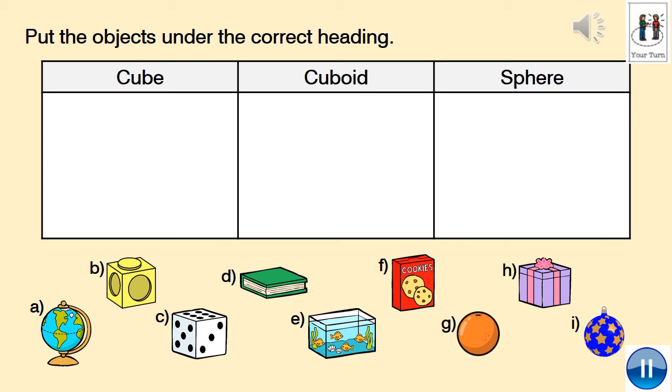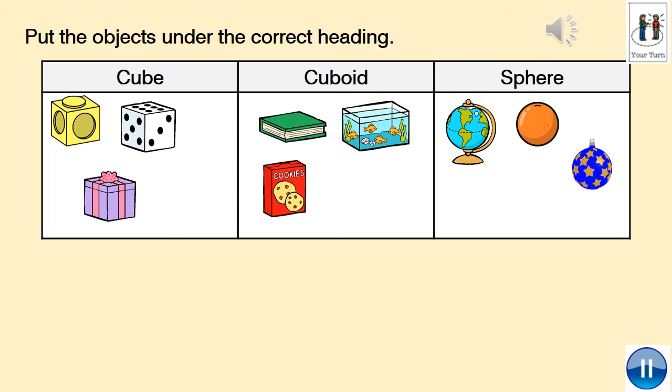Your test now is to put the objects under the correct heading. You've got cube, cuboid and sphere. Have a look at the objects, the 3D objects. Can you either draw or write the name of it or put the letter next. A, B, C, D, E, F, G, H, I into the correct one. Have a look at the first one. A. It's a globe. Is that a cube shape, cuboid or sphere? Write the letter under the correct heading. Here are the answers. Pause the video and tick or fix.